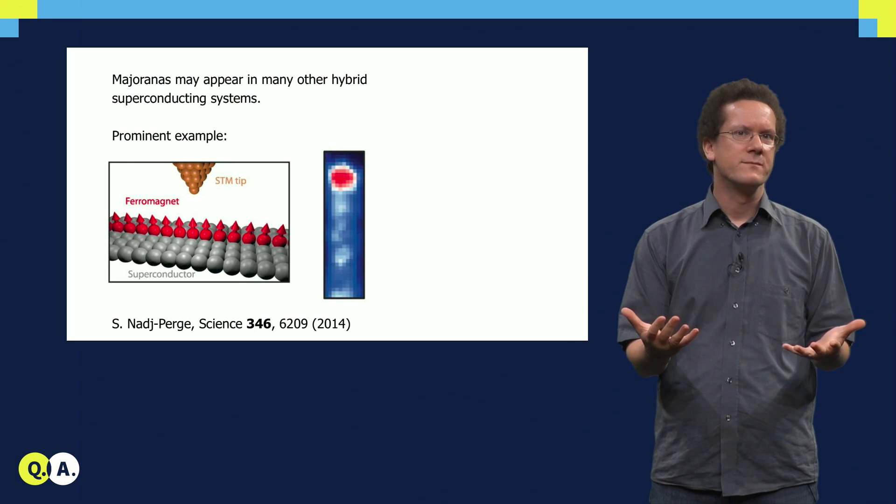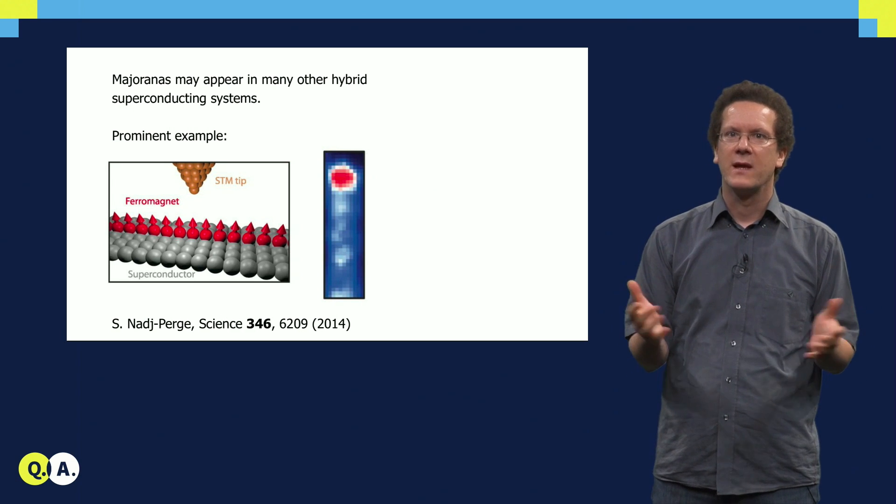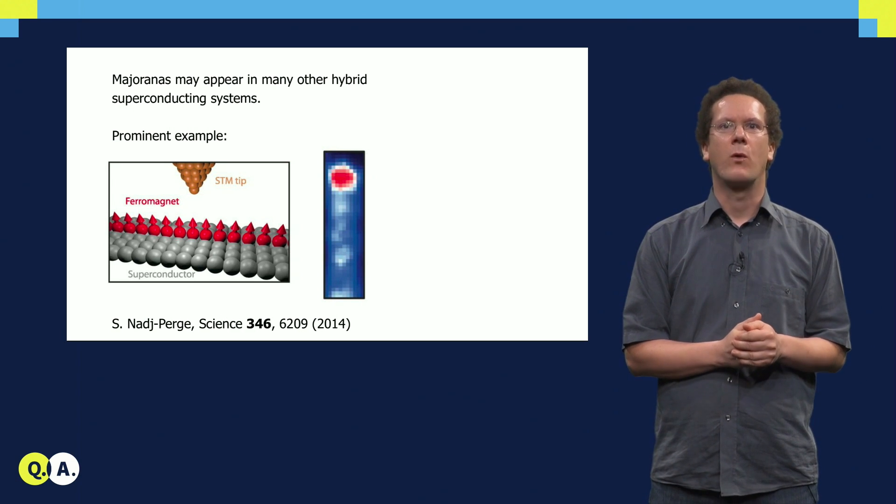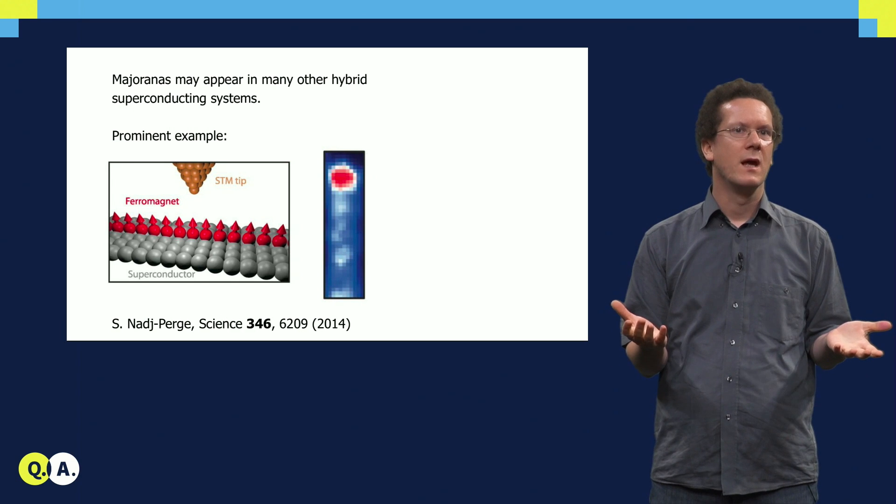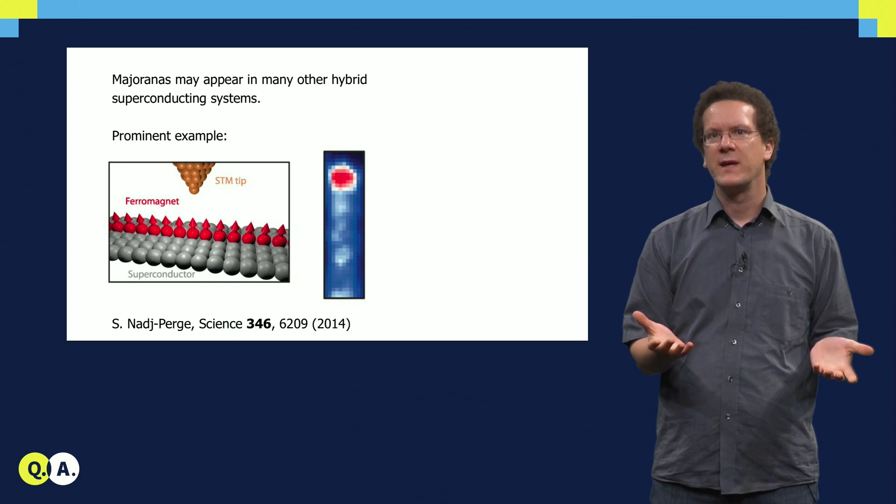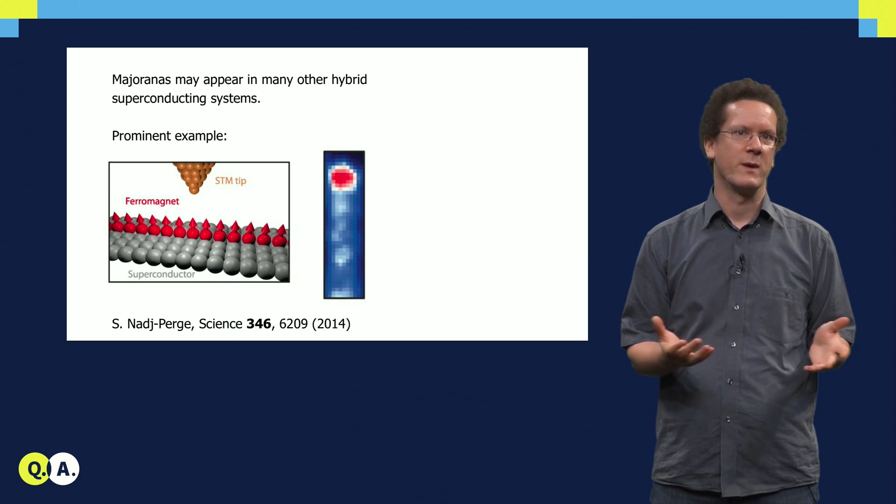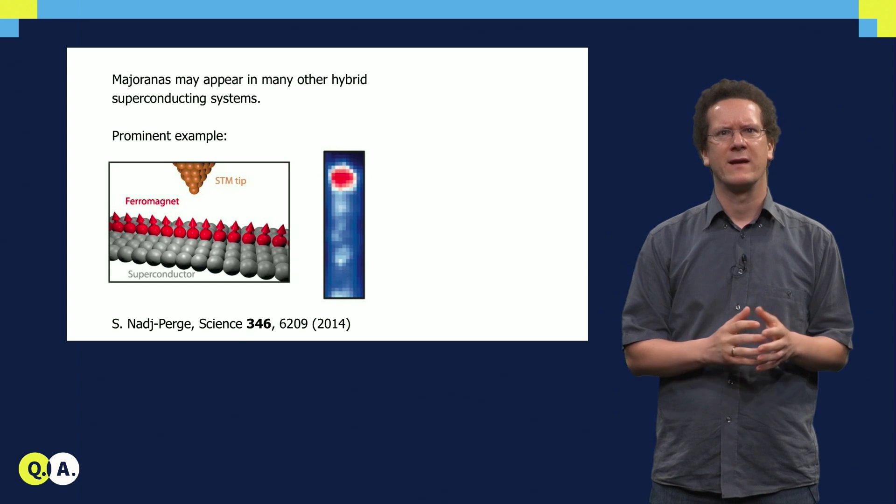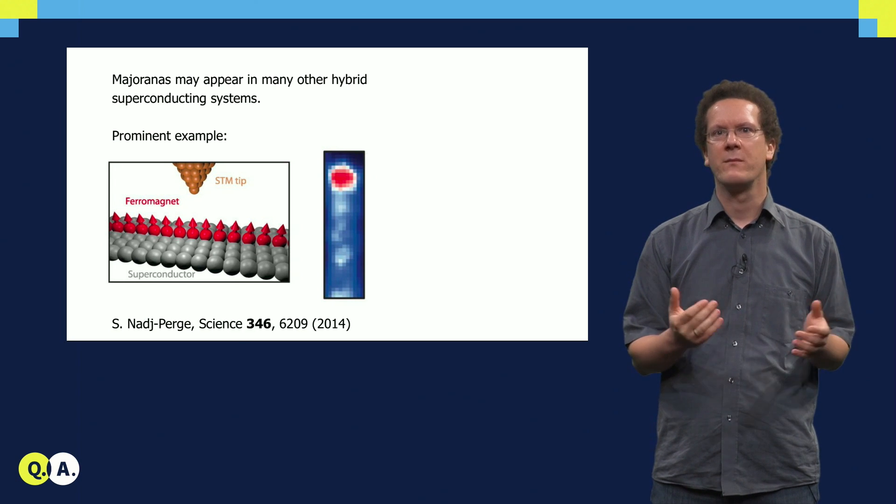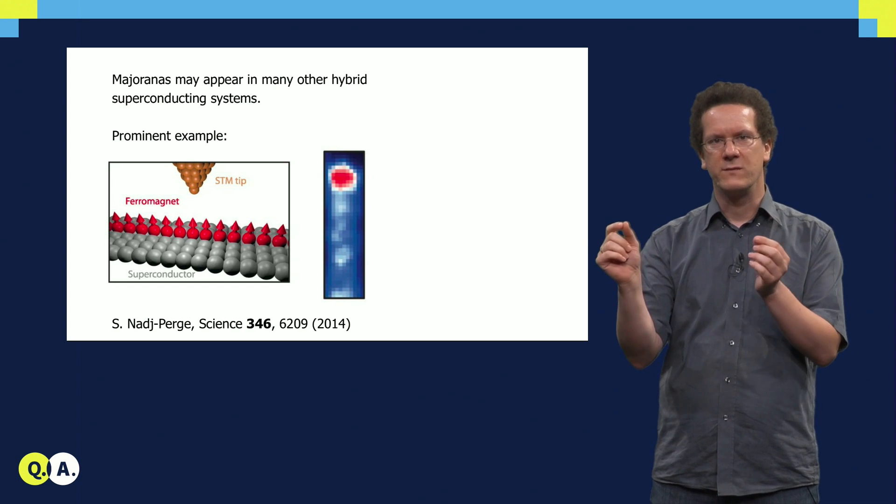I told you in detail about the nanowire platform for Majorana bound states. Before I end, let me emphasize that there are actually more possible systems hosting them. I show one other particular example here. It was predicted that a chain of magnetic atoms on top of a superconductor would also host Majoranas. The group of Ali Yazdani built the system using STM, and indeed they found states localized at the ends of these magnetic chains.